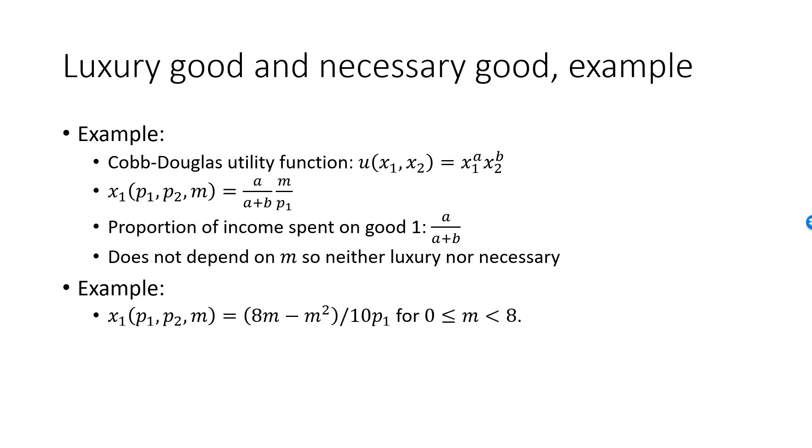In my next example, X1 is 8M minus M squared divided by 10P1, valid only for levels of income between 0 and 8. Multiply by P1 and divide by M, and you find that the proportion of income spent on good one is 0.8 minus 0.1M, which is decreasing in M, making good one a necessary good.